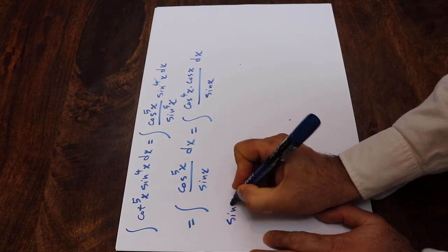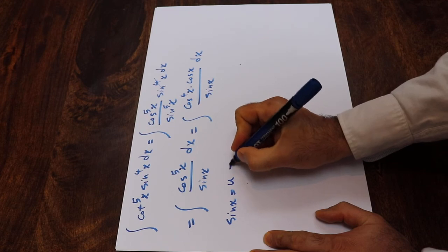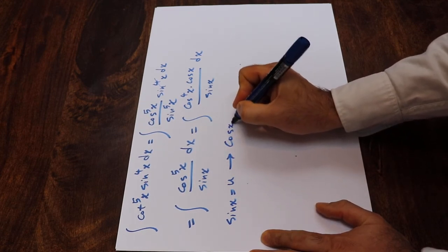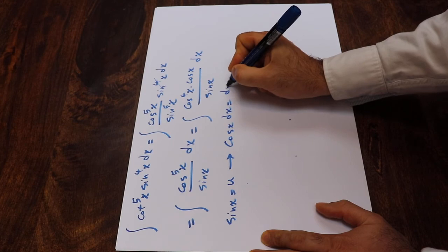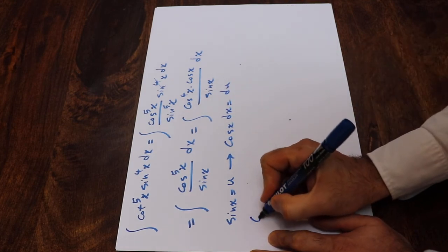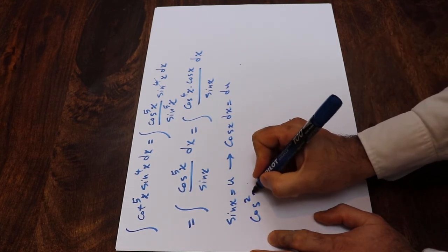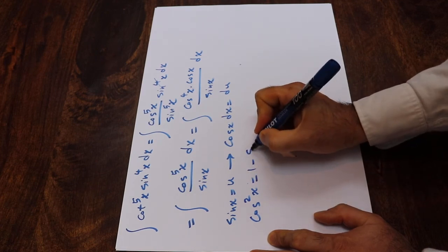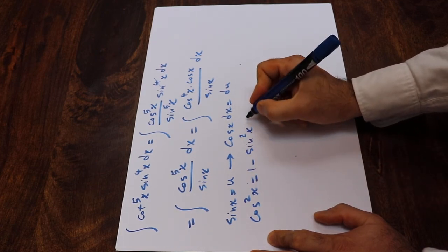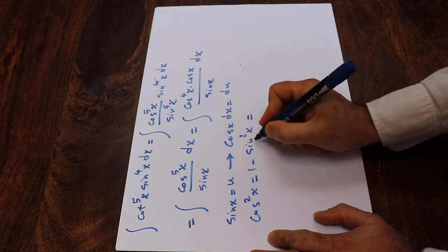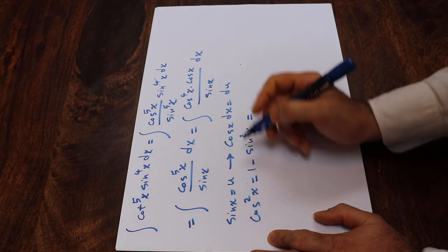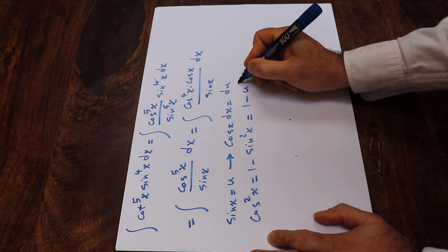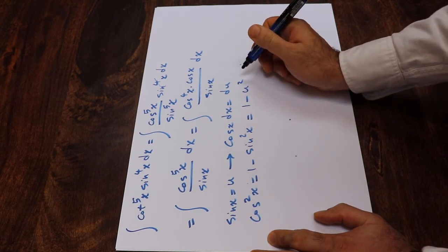If you define sin x as u, and take the derivative from each side of this equation, then cosine x dx will be equal to du. From trigonometry, we know that cosine²x is equal to 1 minus sin²x. And since sin x is equal to u, therefore cosine²x will be equal to 1 minus u².